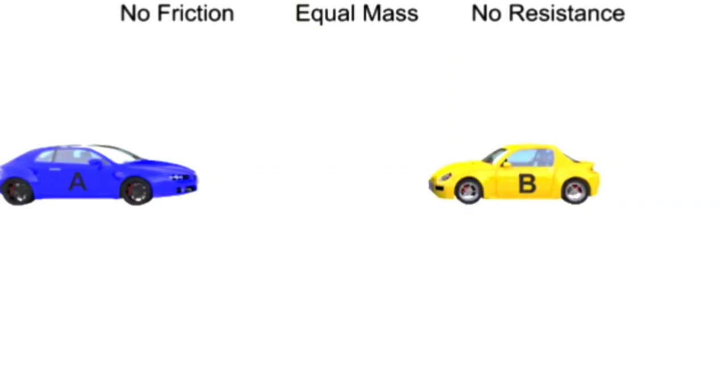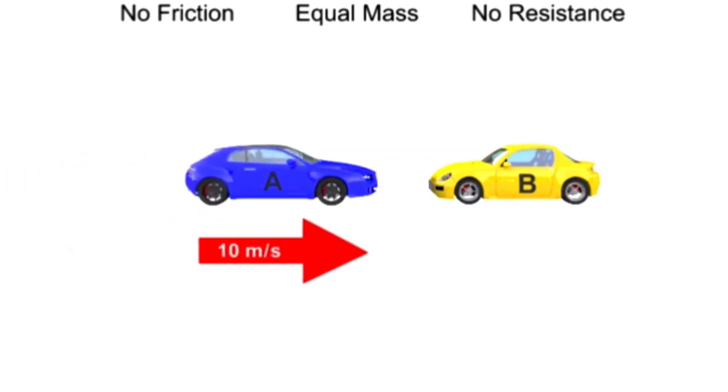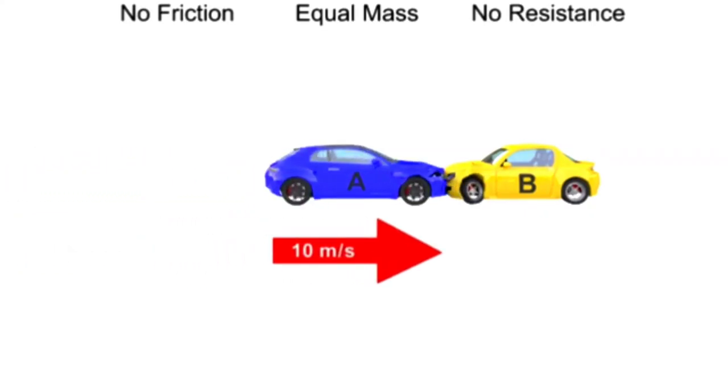Car B is parked when car A plows into it head-on at a velocity of 10 meters per second. Kinetic energy is immediately lost as the cars become mangled and stuck together. Some energy is converted into heat.